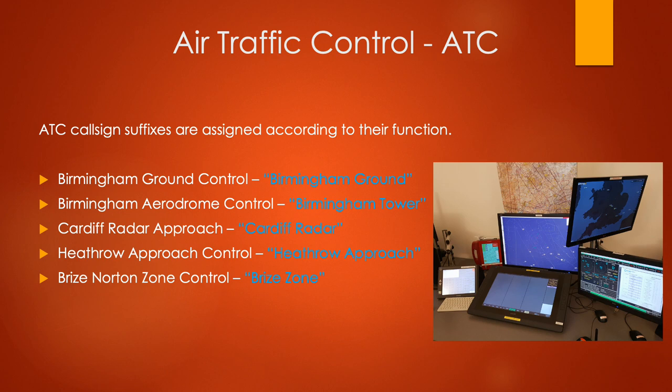The last example is Brawdy Aulton Control Zone, which is a military base with a military air traffic control area and a large controlled airspace. The controller is referred to as zone, so it's Brawdy — the location — and zone. For each ATC unit, there's a location followed by the station type: whether it's ground, tower, radar, approach, or zone.